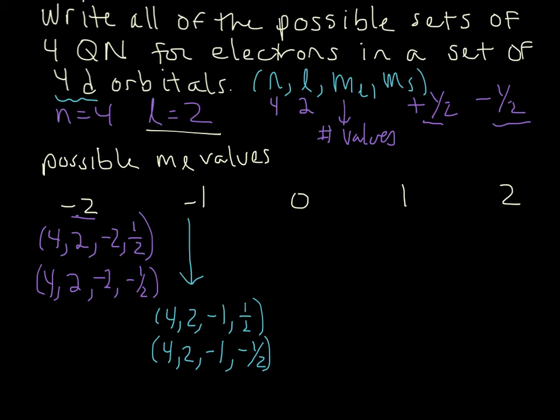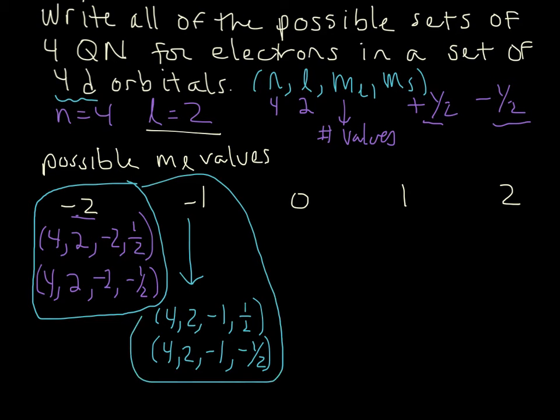So another thing to just think about while we're here is that this particular value for m sub l, that is one of those d orbitals. So this is one of them. Here's another one. Because remember, the number of m sub l values gives us the number of orbitals in a set. And look, each one of these two orbitals can hold 2 electrons. So this is 2 electrons here, and 2 electrons here. So let's go ahead and write out the rest of the sets.